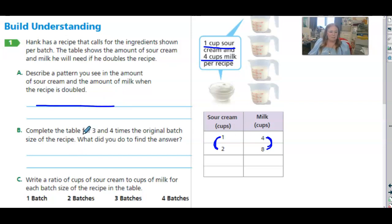Now it wants us to complete the table for three and four times the original size. So what do we do to find the answer? I'm going to times the milk, the basic ratio. Always go back to that basic ratio. So we're going to times the basic ratio by three.